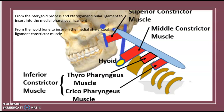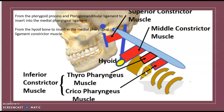The inferior constrictor muscle includes two parts. The first one is the thyrohyoid pharyngeus muscle, and the second one is the cricopharyngeus muscle. The thyrohyoid pharyngeus connects the thyroid cartilage to the medial pharyngeal ligament, and the cricopharyngeus connects the cricoid cartilage to the medial pharyngeal ligament. Together, these two muscles constitute the inferior constrictor muscle.